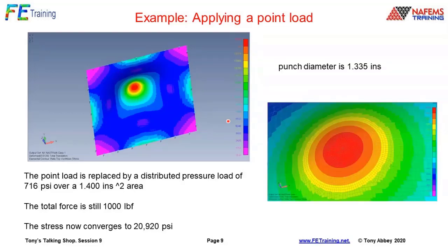Increasing the punch size further shows very nice concentric stresses. Bear in mind these are top surface bending stresses from the bending action under the punch load — not through-thickness or contact stresses. The stress converges directly to a new value with the fine mesh, with no issues. A slightly coarser mesh is used away from the contact region to speed the model up, but around the punch zone we get a very nice stress pattern.